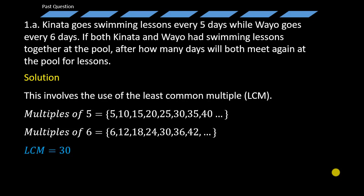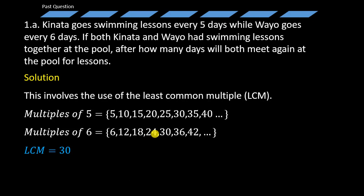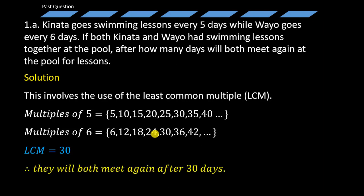What would be the least common multiple? That is 30. Because 30 appears in both — it is the least number that appears in both sets of multiples. So we can therefore conclude that they are actually going to meet again after 30 days.